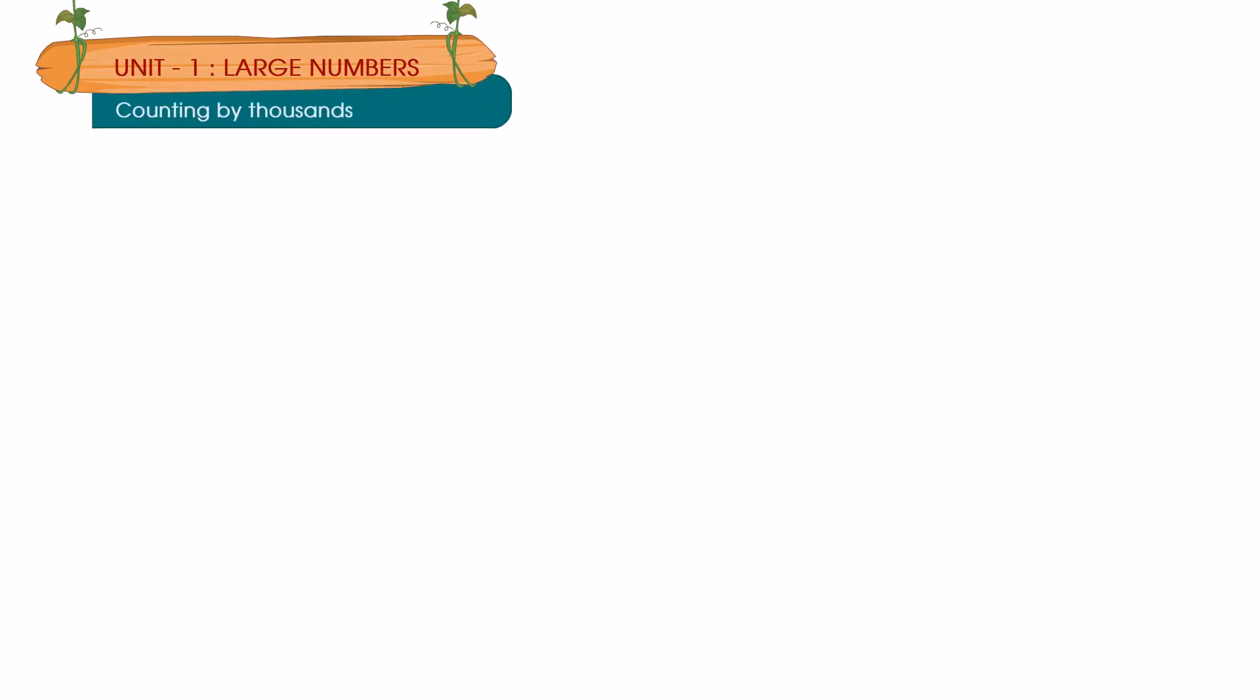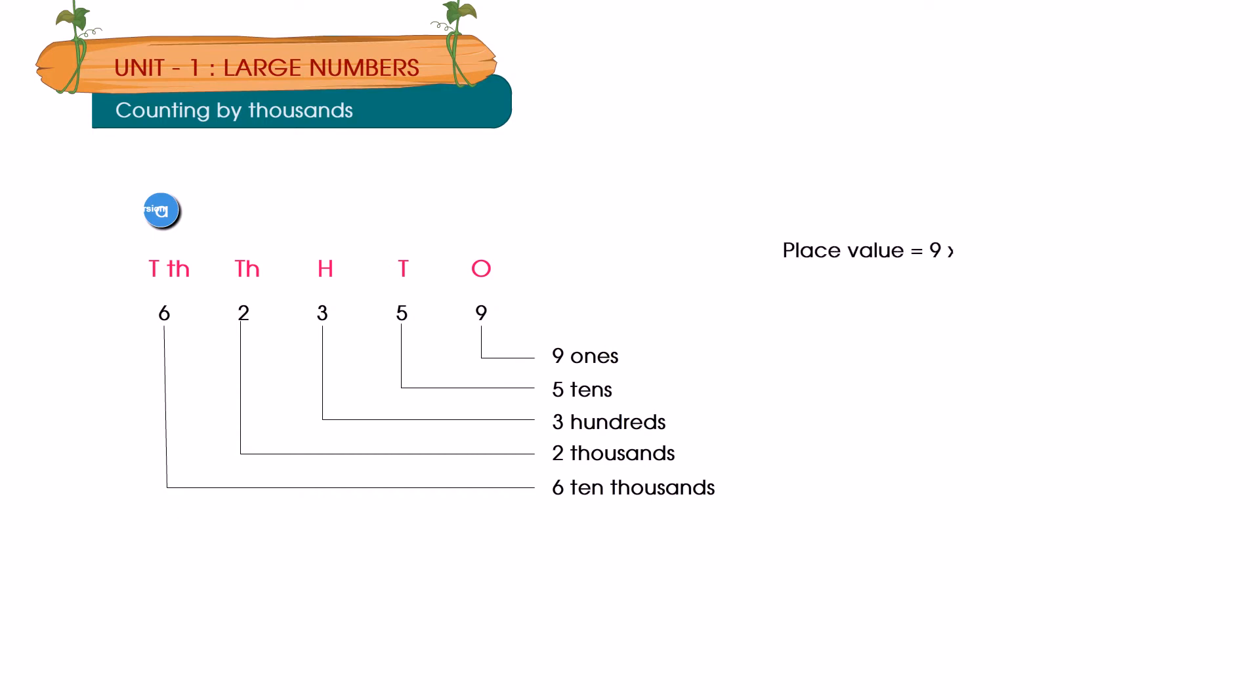Counting the thousands: 62,359. Place value equals 9 times 1 equals 9. Place value equals 5 times 10 equals 50. Place value equals 3 times 100 equals 300. Place value equals 2 times 1000. Place value equals 6 times 10,000 equals 60,000.